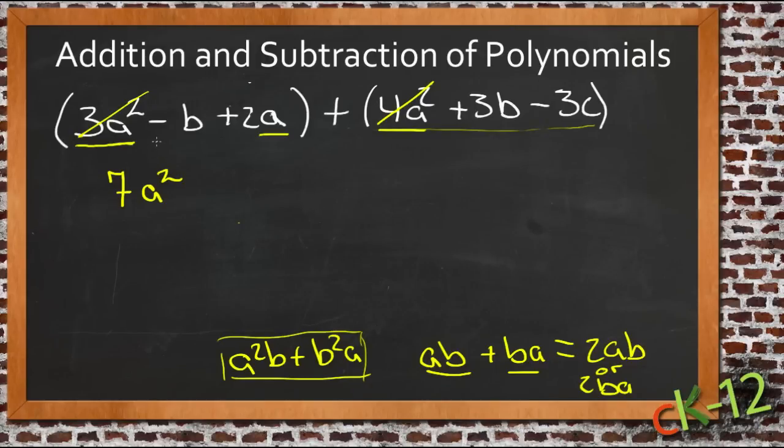And then those are taken care of. Next thing we have is negative b. So we have negative 1b, and then we're adding that to 3b, because those are exactly the same. So if we owe 1 and we get 3, then we must have 2 once we pay off our debt. So we'll have 2b's. And then those two are taken care of.